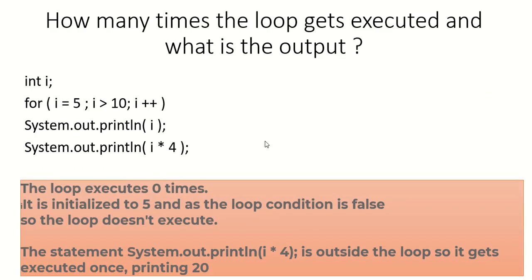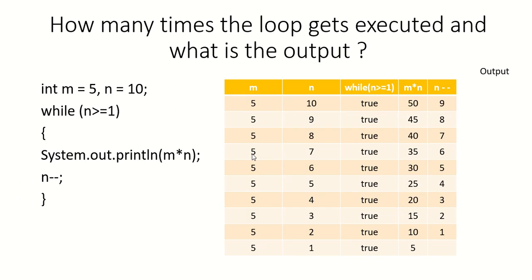Here the loop will not get executed because the condition is false. So directly it will print the next statement following the loop, which is i into 4, and 5 into 4 is 20. I have shown you step by step how it works. You can pause the video and check how it works.